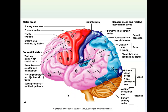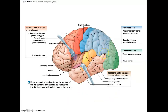Looking at the picture, we can see different lobes of the brain with different color codes. There are bumps called gyri and shallow grooves called sulci. We're going to go into the lobes now.